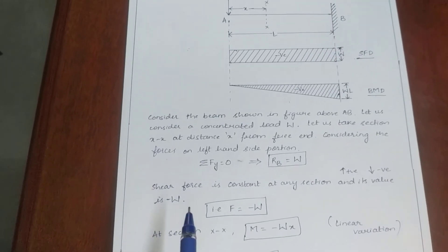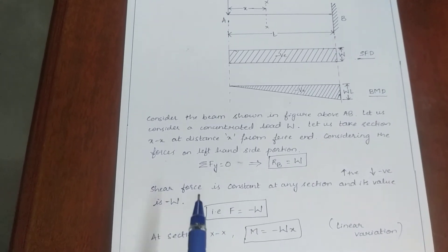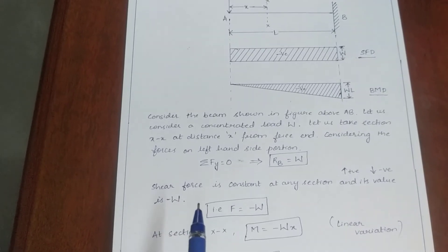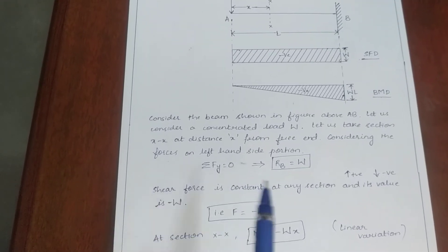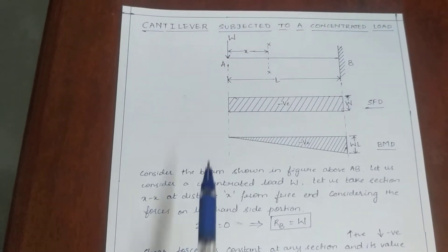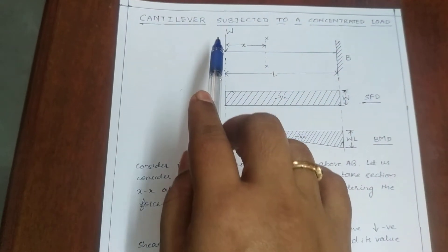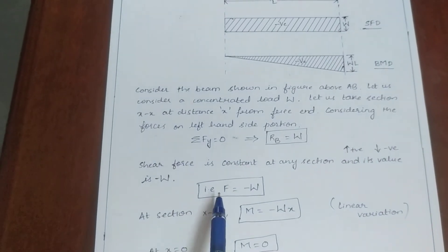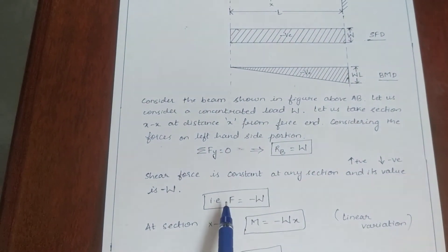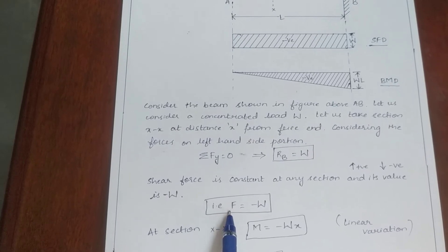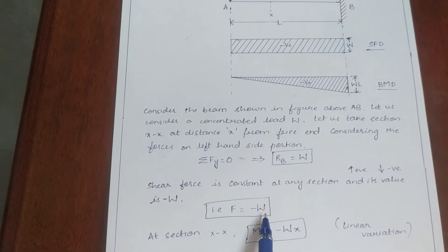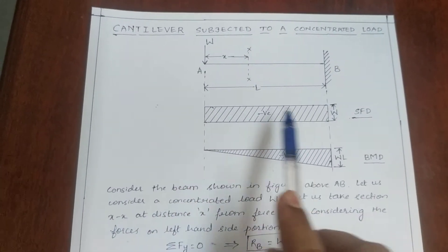And we know that shear force is always the algebraic summation of forces on either side of the section. So here the concentrated load W is in the downward direction. So the shear force will be constant at any section. So shear force F equals minus W. I have drawn the shear force diagram here.